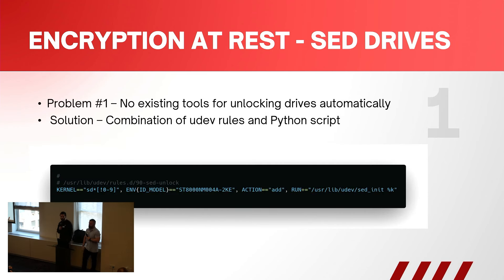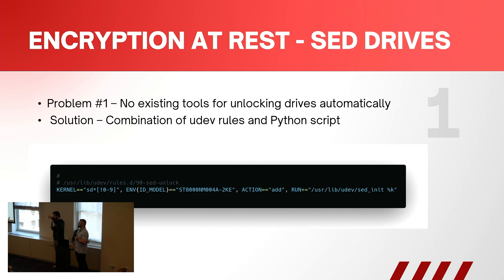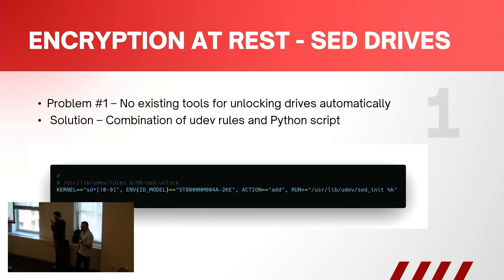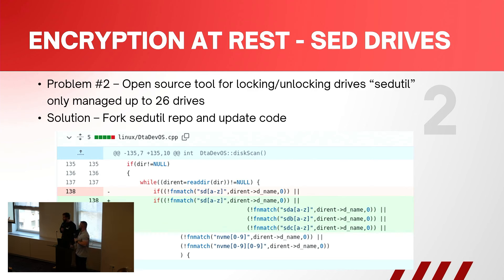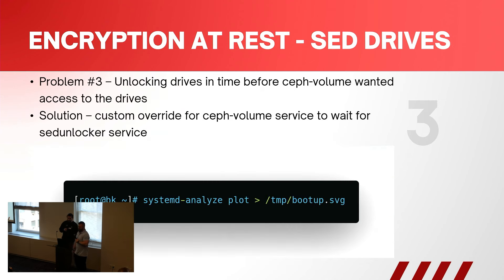For problem one — no existing tools for automatically unlocking drives — we used a combination of UDEV rules and Python scripts. My initial plan was one UDEV rule that does everything. Initializing new drives worked fine, but on subsequent reboots and power cycles it wasn't fast enough and was hard to debug. So we moved the unlocking out into a systemd service and parallelized it with a Python script. For challenge two — sedutil only addressing 26 drives — that was a pretty easy fix: fork the code and update it. They were simply looking at SDA through Z and stopping there, so we just told them to keep looking.